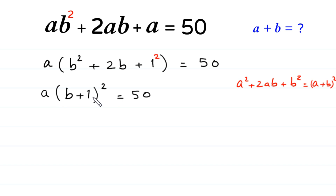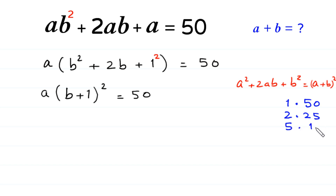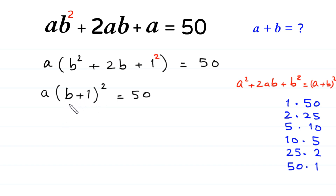Now at the left side we have two factors: one factor is a and the other is (b + 1)². We factorize 50 as: 1×50, 2×25, 5×10, 10×5, 25×2, and 50×1. Because we have a perfect square (b + 1)² on the left side, we select only those factor pairs where the second factor is a perfect square.